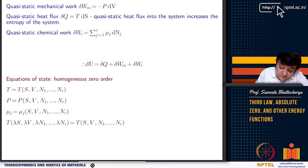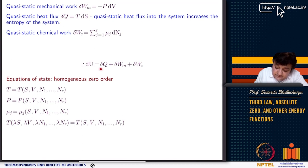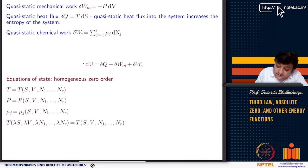This is the combined statement of the first and second laws including chemical species. We have delta_w = −P dV as mechanical work, delta_q = T dS as heat input, and the chemical work delta_w_c = sum_{j=1}^{r} mu_j dn_j. So you have the thermal work (heat input), the mechanical work, and the chemical work.